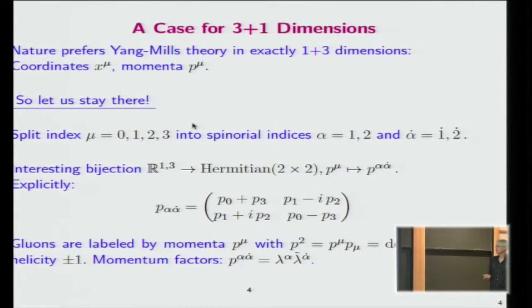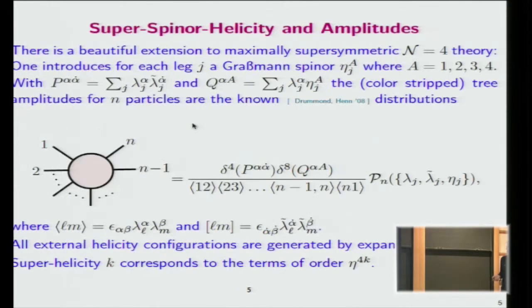What's so special here? You have this wonderful bijection between a four-vector in Minkowski space and the Hermitian two-by-two matrices. For massless particles, the P squared of the momentum is just the determinant of this matrix, which vanishes. Therefore, it must be of at most rank one. You can factor this Hermitian matrix into these spinors, variables lambda α, lambda tilde α̇.